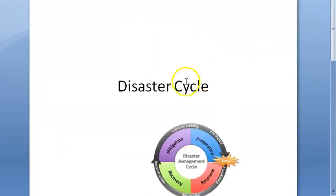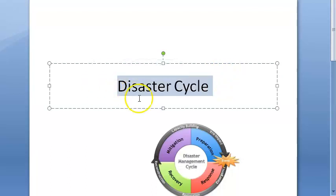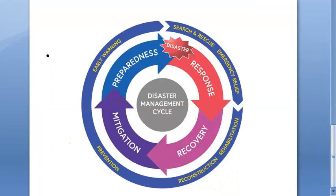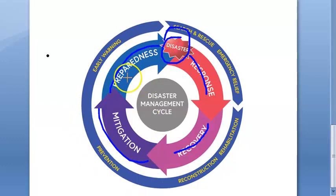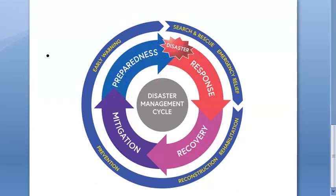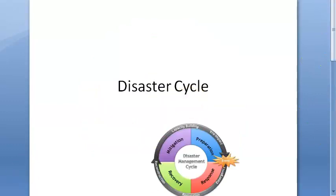To summarize the disaster cycle: after a disaster, you have response, then recovery, then mitigation, and finally preparedness — which hopefully prevents the next disaster. Remember to draw the cycle in the exam.